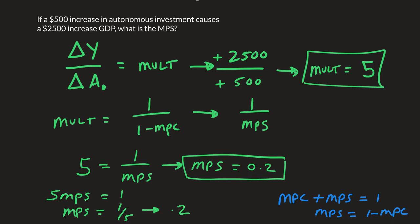So that's how you calculate the MPS. We need a few things: we need to understand what that multiplier was really telling us, and we needed to know the equation of that multiplier.